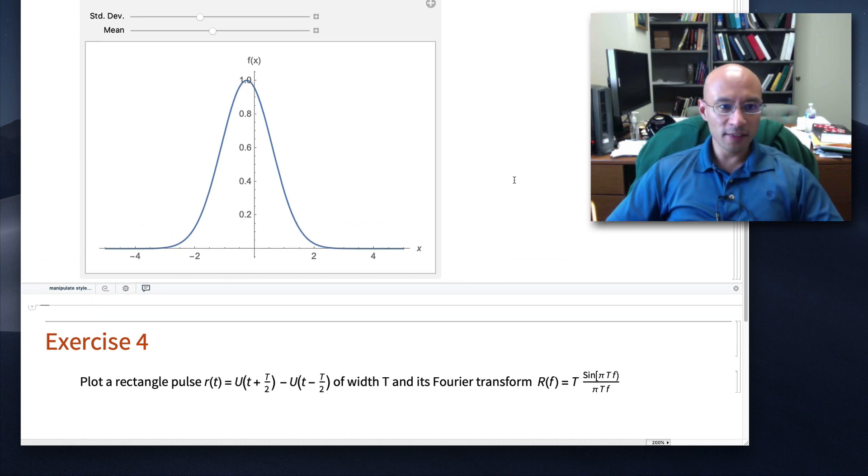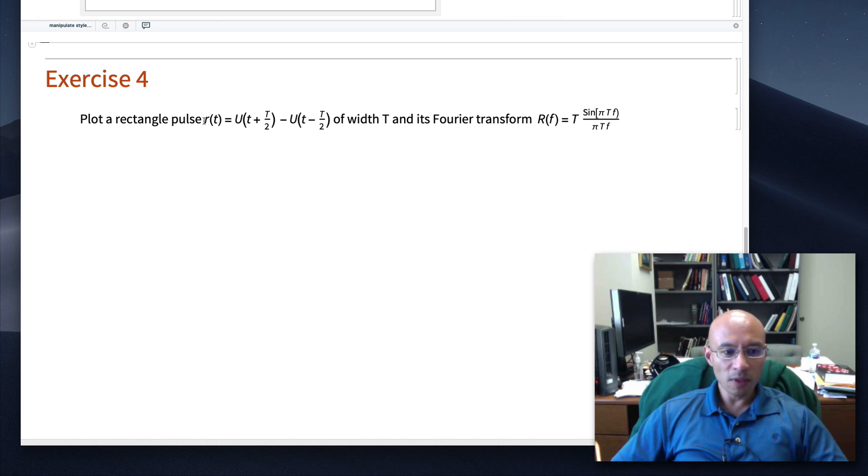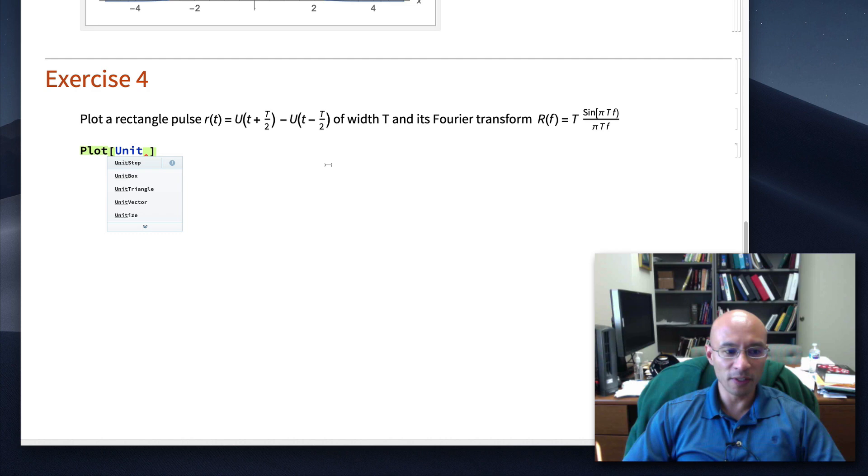Now exercise 4 is slightly different. I get to show you a couple of new functions here, I suppose. We're going to make a rectangular pulse and its Fourier transform. And sometimes it'll be useful to have them side by side. So let's try that. Let's start just by plotting a unit pulse. To get this, these U's are actually unit step functions. Our rectangular pulse will be unit step. And you can see Mathematica has tab completion. It wants to suggest for me unit step. So I can choose unit step and then hit tab. That's very nice.